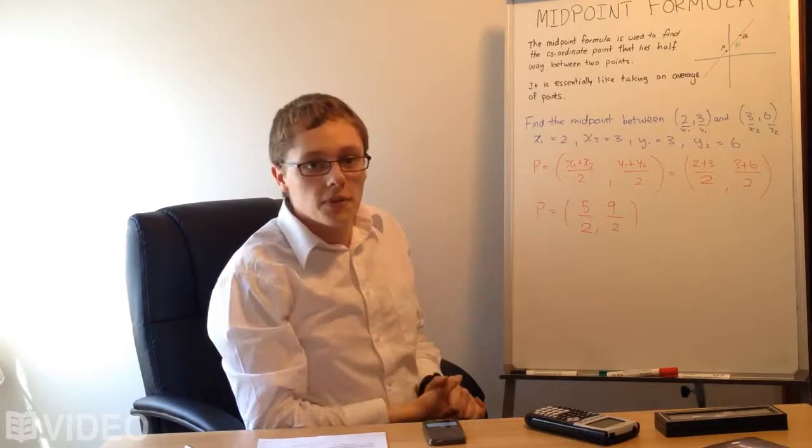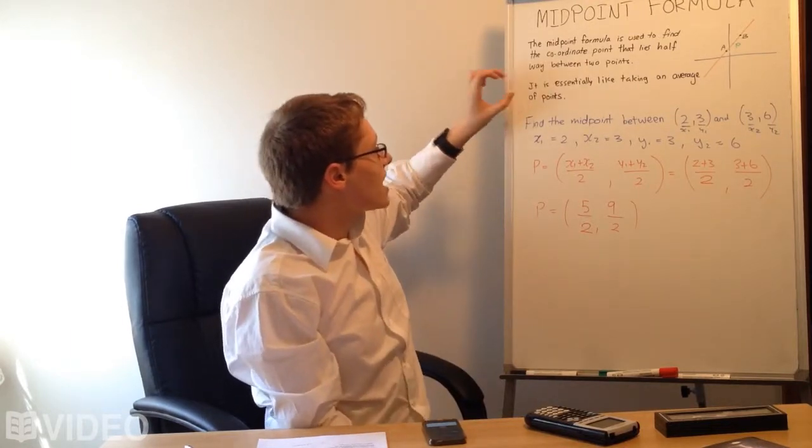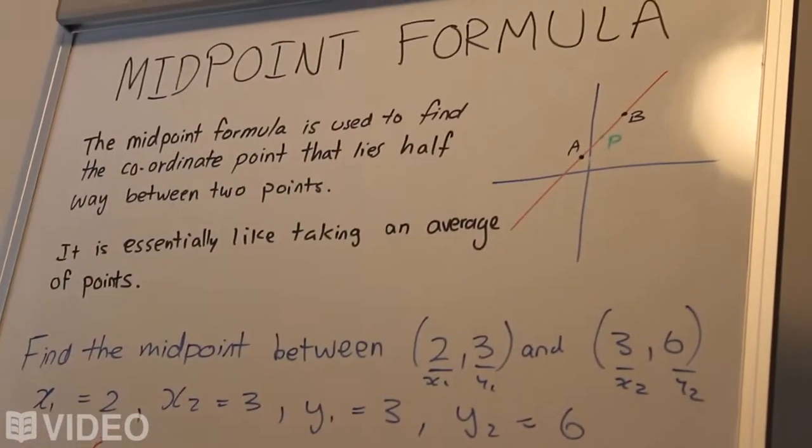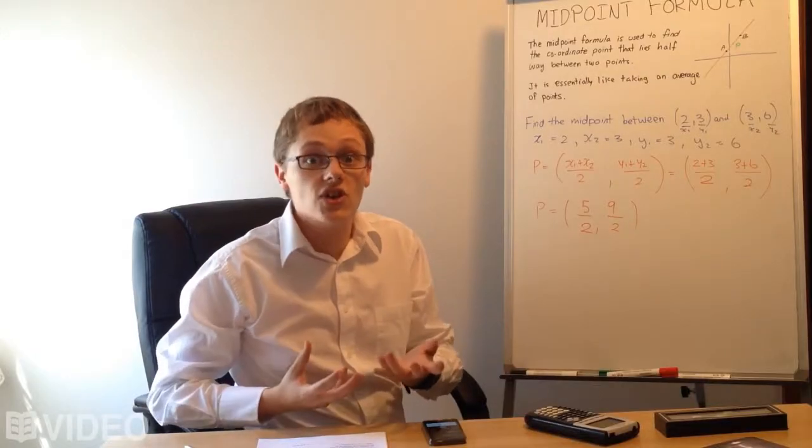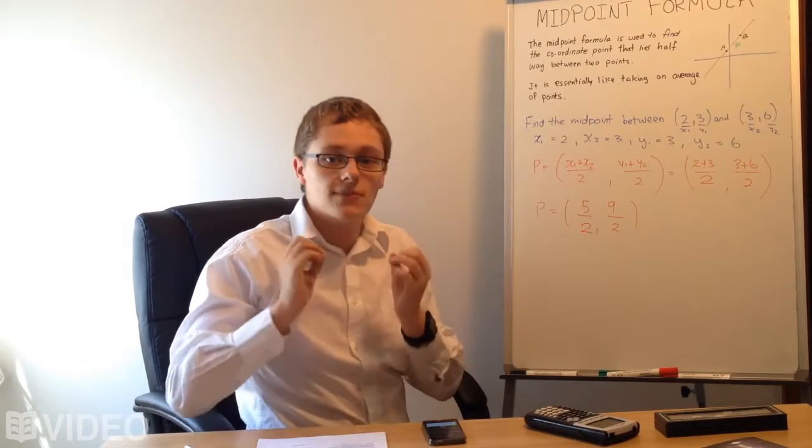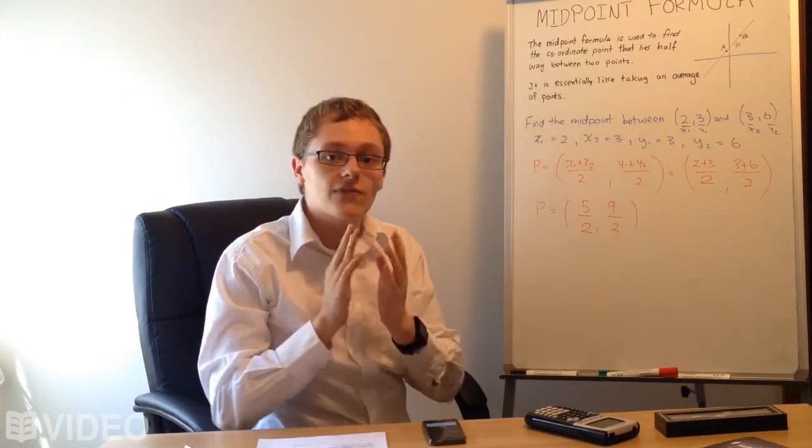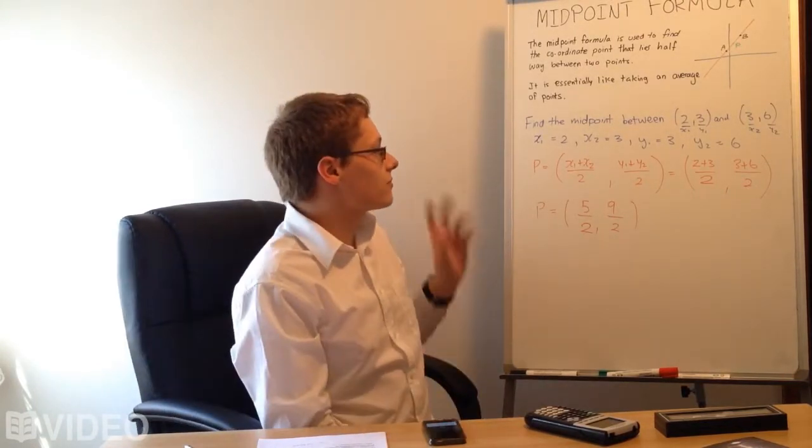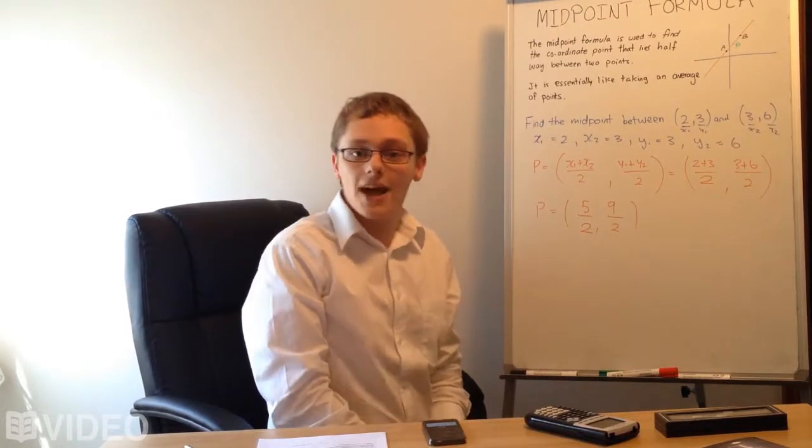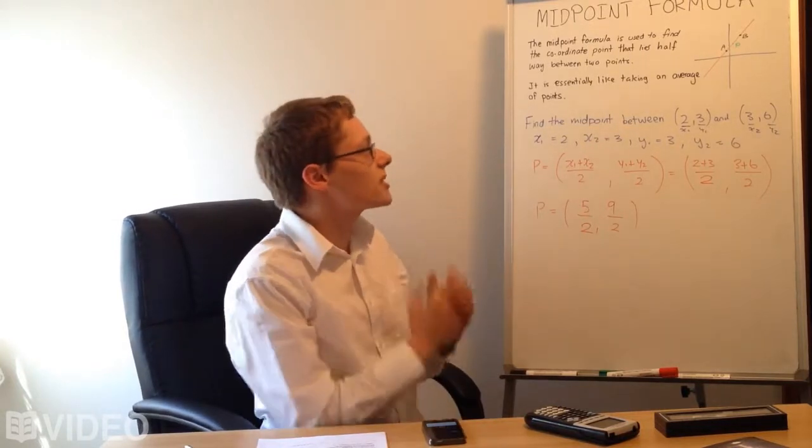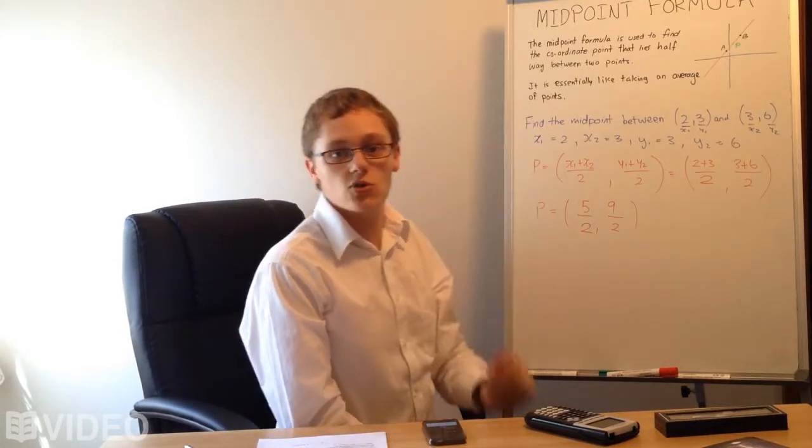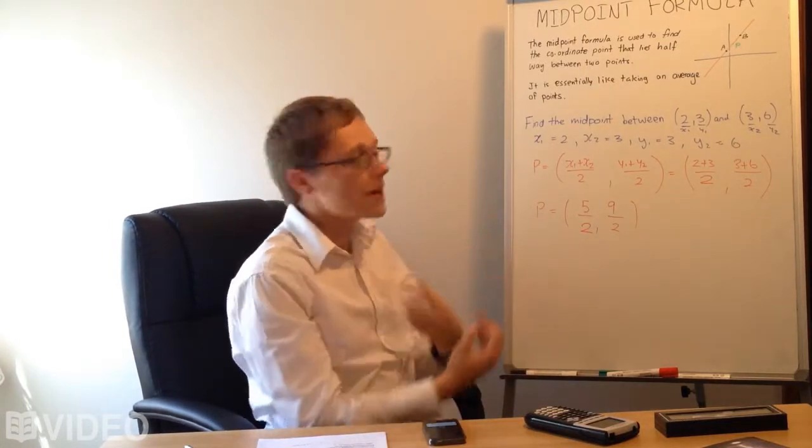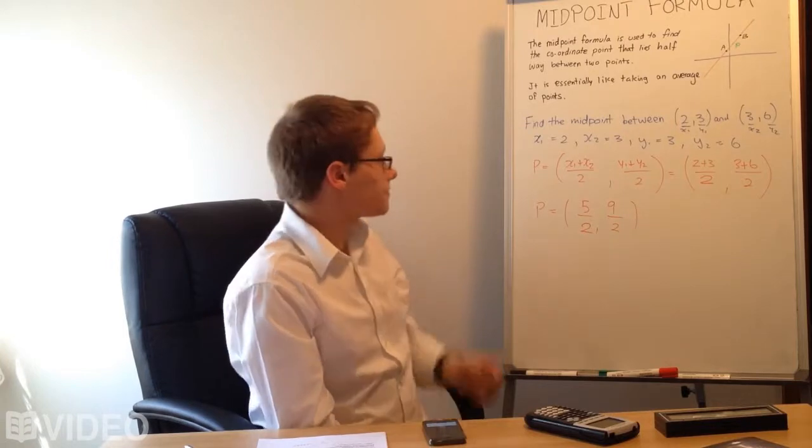So, this is a nice little formula. And, essentially, it's like taking an average of the points. So, you've probably done averages before. You just add things together, and you divide by the number of things you have. It's essentially the same sort of logic, because you're just looking for the middle. And, that's where we're going to look at an example now, so we can actually grasp this concept of the midpoint. Remember, it just lies exactly halfway between two points, and these two points might be on the line, for example.